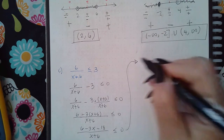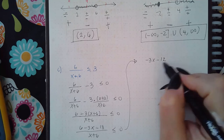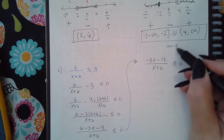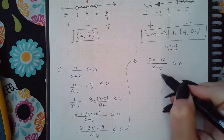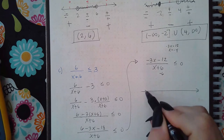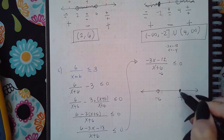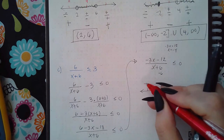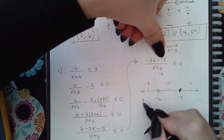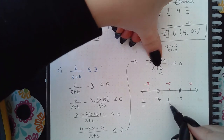Simplifying the numerator gives negative three x minus 12 over x plus six. Setting the numerator equal to zero gives x equals negative four, and the denominator equal to zero gives x equals negative six. The denominator always gets an open dot; the numerator has a bar so negative four gets a solid dot. Test points are negative seven, negative five, and zero.